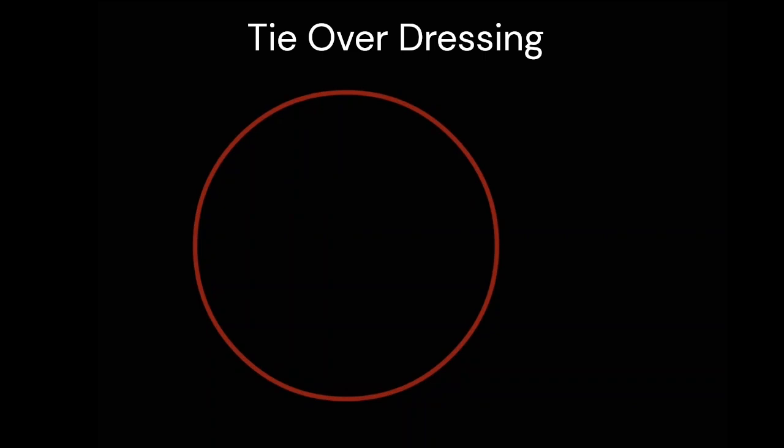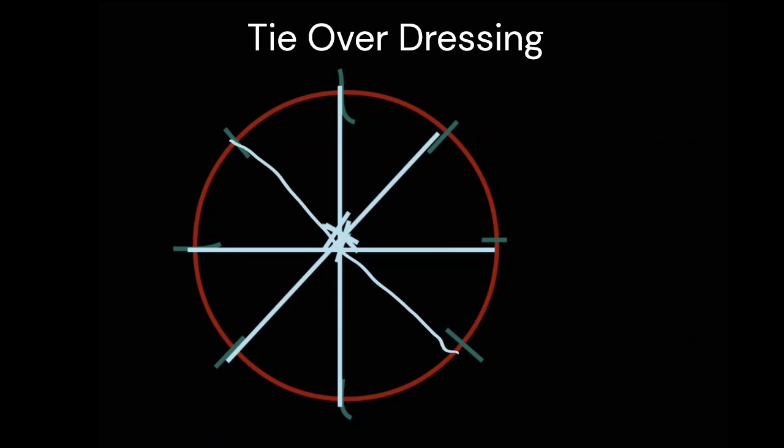The purpose is that this is our defect. It is an irregular defect. It is difficult to immobilize this particular defect, and so we are going ahead and doing a tie-over dressing in this particular fashion. So what happens here is...